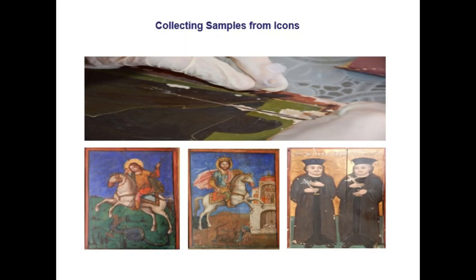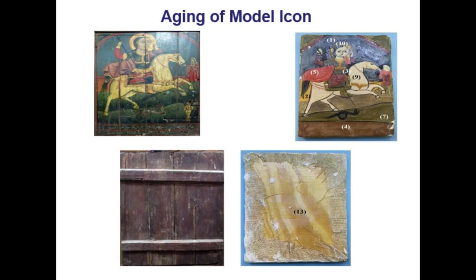Another project, funded by the Academy of Scientific Research and Technology, studied Coptic icons in depth. We collected samples from broken Coptic icons to determine their structure using infrared spectroscopy and Raman spectroscopy, as well as EDX and X-ray fluorescence to identify both elemental and organic composition. We then constructed a model icon made from the same chemical constituents as the original, and studied the effect of aging to replicate conditions similar to the original.